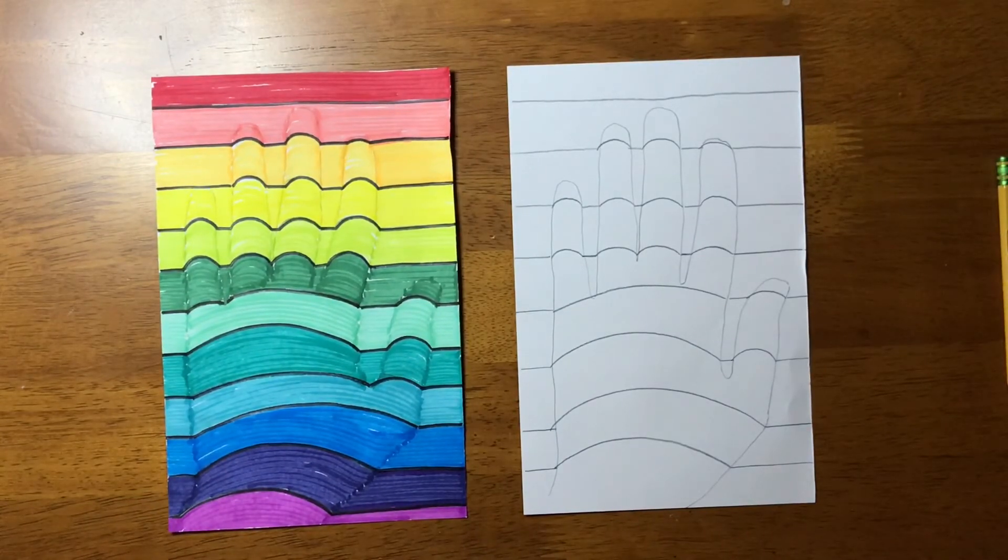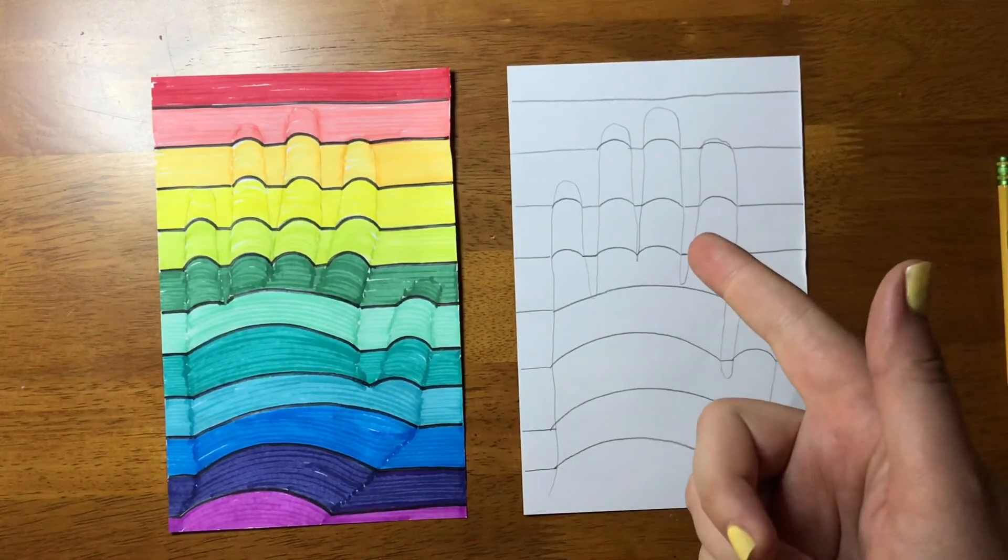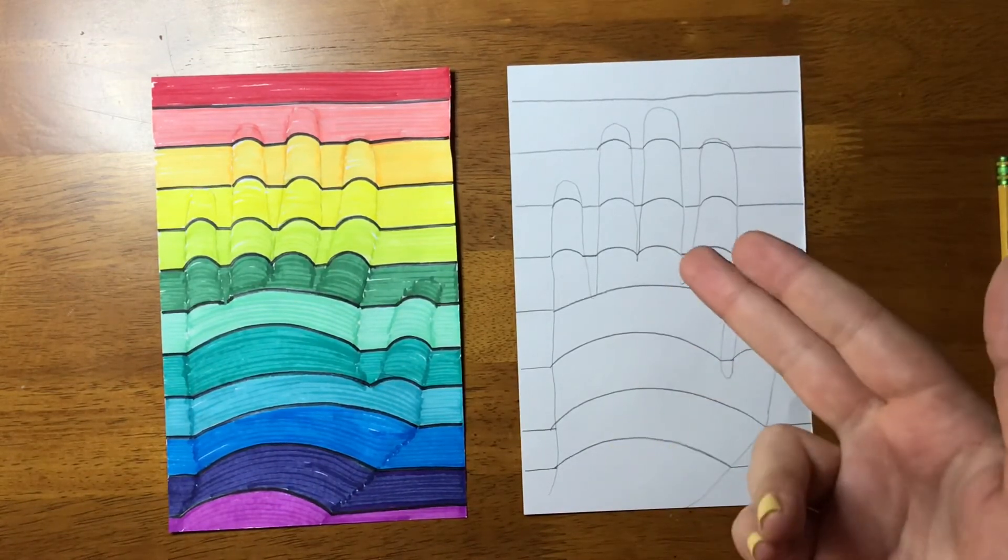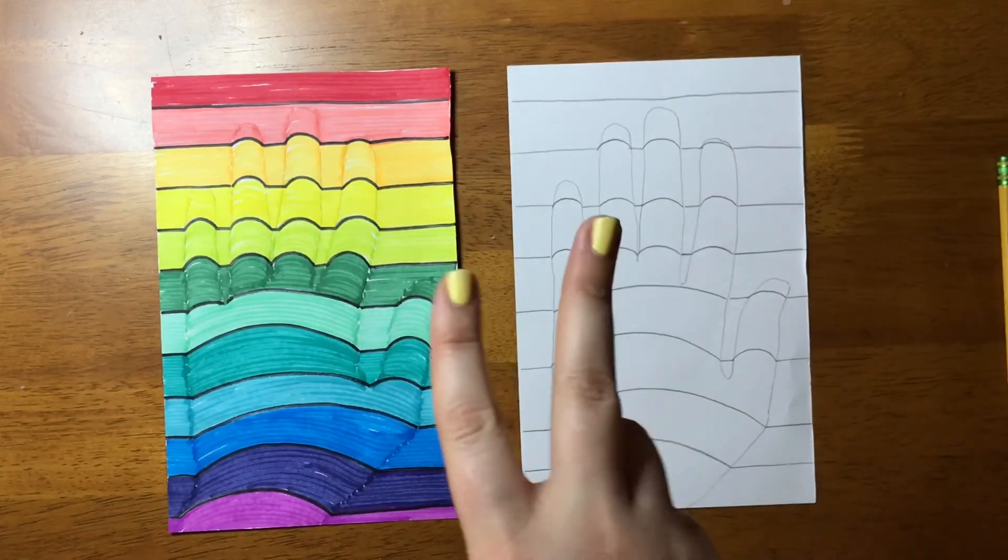So, each table can choose to use colored pencils, skinny markers, fat markers, or crayons. Each table can choose two bins.